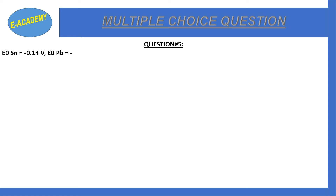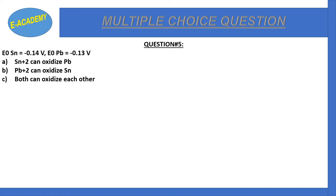Question number 5: The standard reduction potential of Sn is −0.14 V and that of Pb is −0.13 V. Can Sn²⁺ oxidize Pb, can Pb²⁺ oxidize Sn, can both oxidize each other, or can both reduce each other? The correct option is B: Pb²⁺ can oxidize Sn.